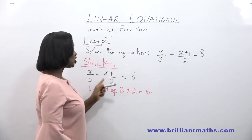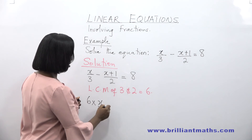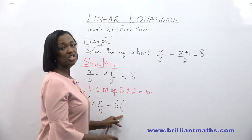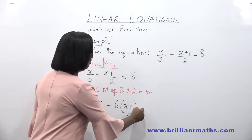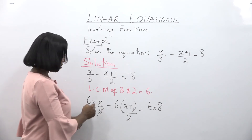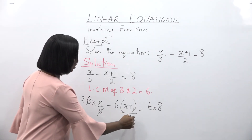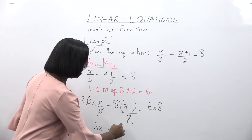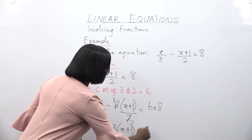The LCM of 3 and 2 is 6. So we multiply each term by 6: 6 times x over 3, minus 6 times (x plus 1) over 2, is equal to 6 times 8. We introduce a bracket because there are two terms. 3 in 6 is 2, giving us 2x. 2 in 6 is 3, so we get minus 3 times (x plus 1), equal to 6 times 8, which is 48.